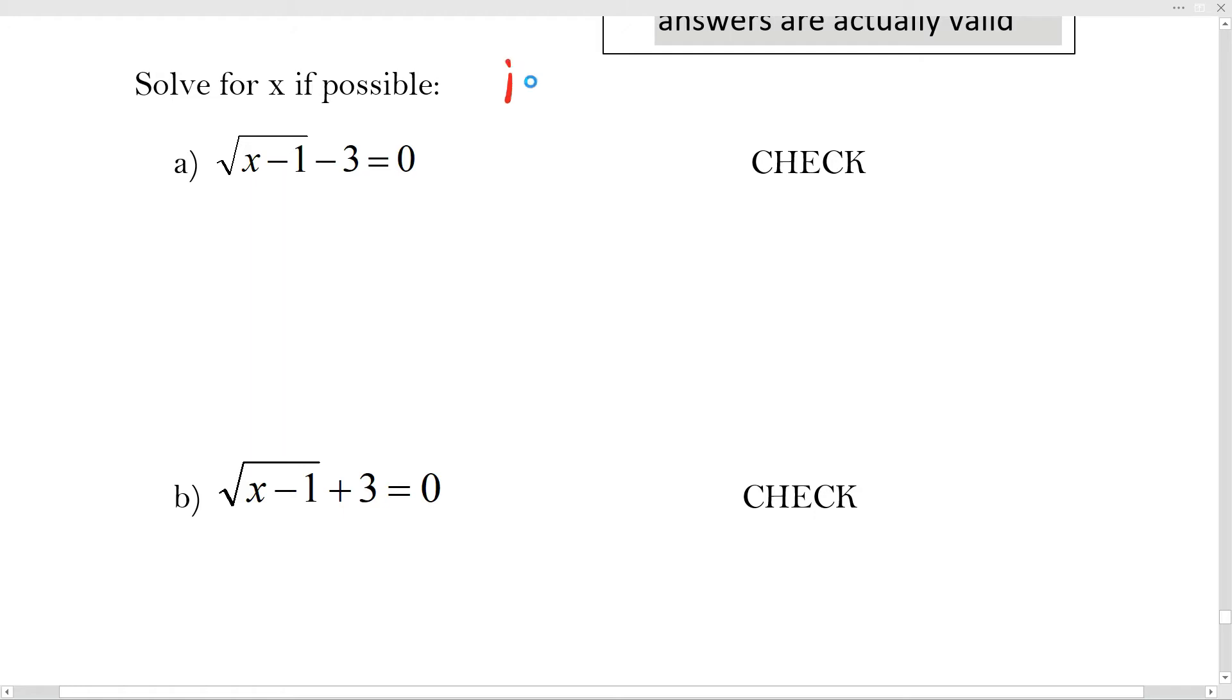I'm going to just write this down. You always have to isolate the surd, otherwise you can't then square it. And there's one vital error which most people make that I will show you.